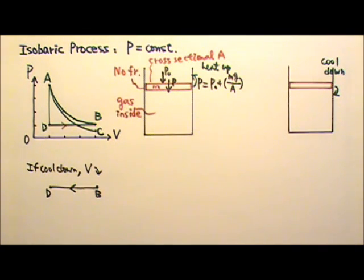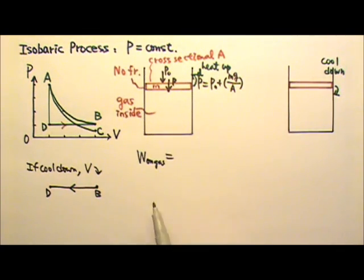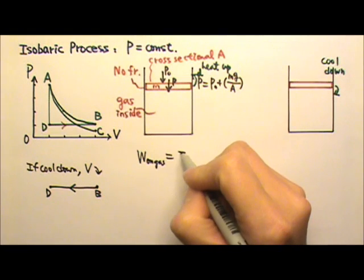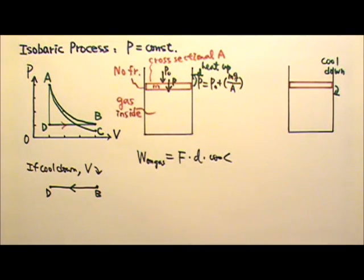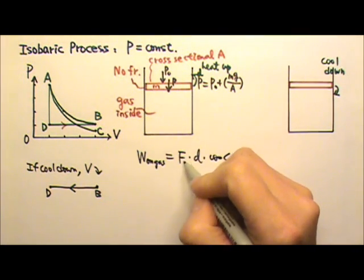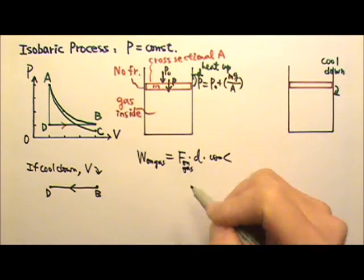We can also find the work done on the gas in an isobaric process. The work done is the force times the displacement times cosine the angle between the two. Since we want the work done on the gas by the environment, we need the force on the gas by the environment.